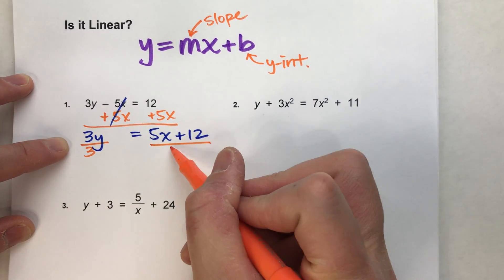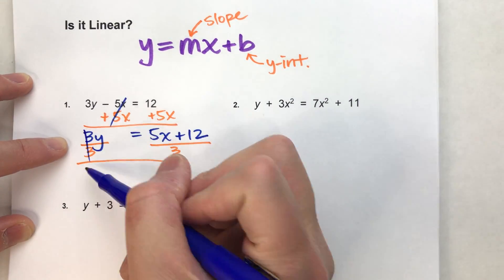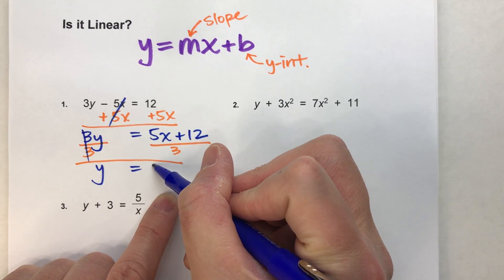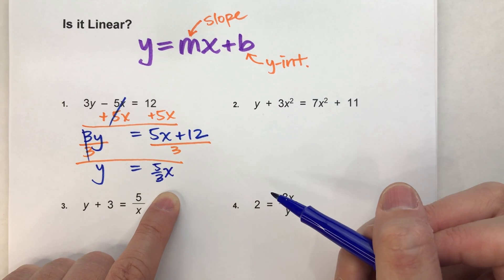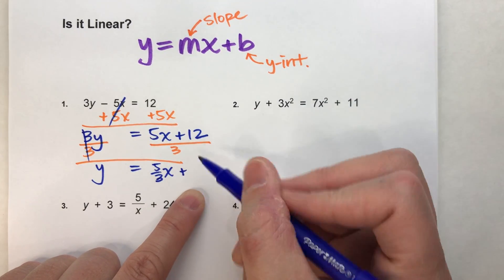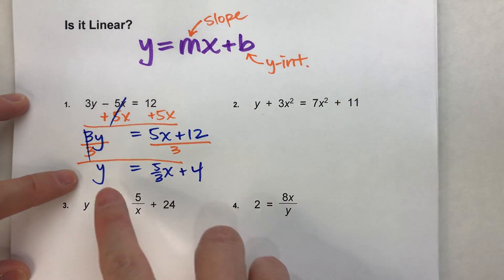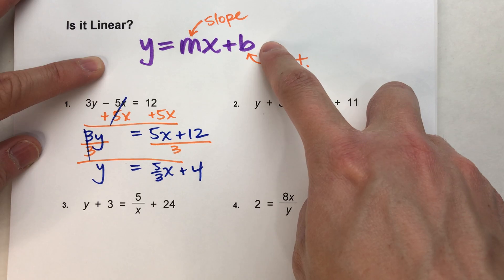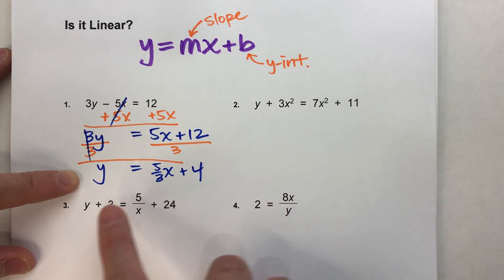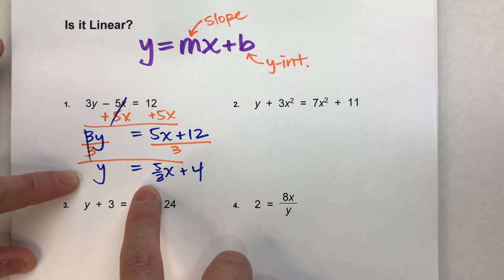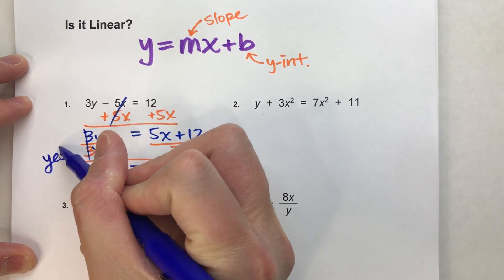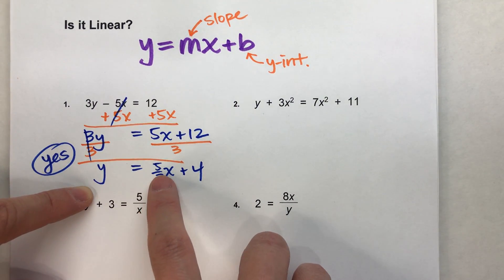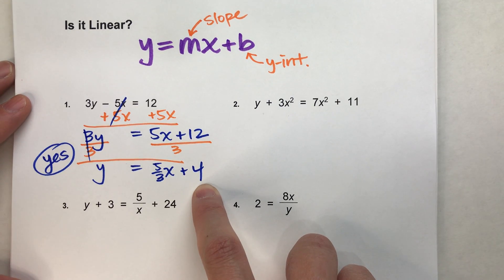I've almost got y by itself but I need to divide by 3 to get rid of that 3. The 3s undo each other, y drops down, and on the other side 5 divided by 3 is 5 thirds x, and 12 divided by 3 is 4. So I get y equals 5 thirds x plus 4. This is linear — the slope is 5 thirds and the y-intercept is 4. It's in slope-intercept form.